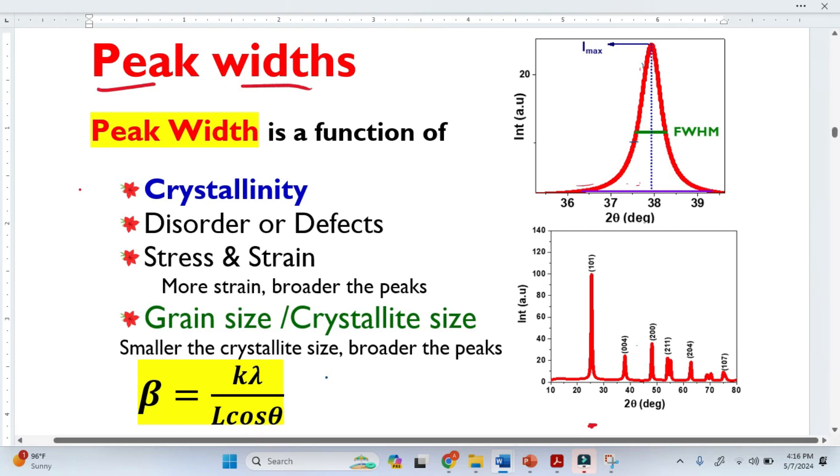Peak width is another important parameter in XRD analysis. It provides a lot of information about the materials. This is a common XRD pattern. If you look into every peak, there is a width of the peak here. I just magnified this peak here and you can see that this peak has a width. So this width of the peak provides a lot of information.